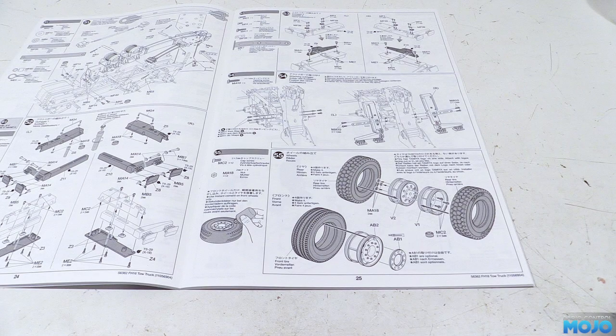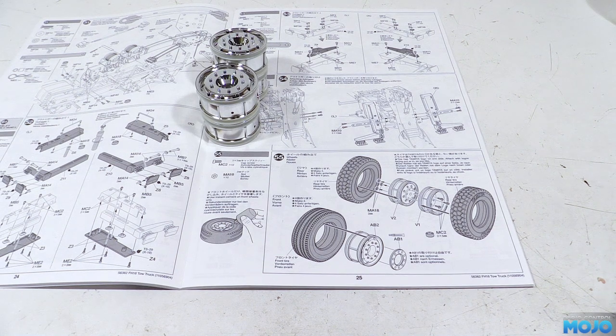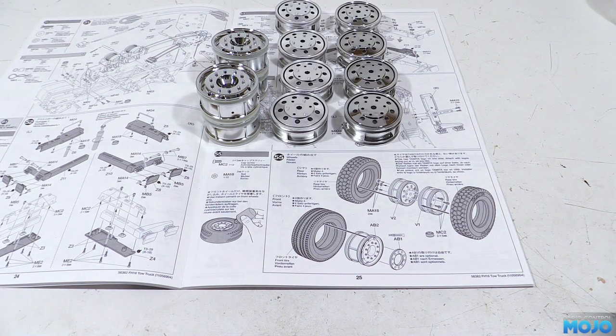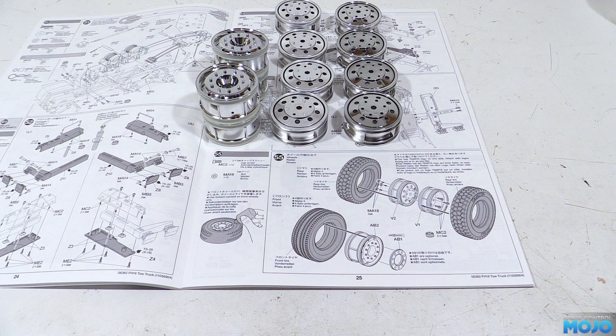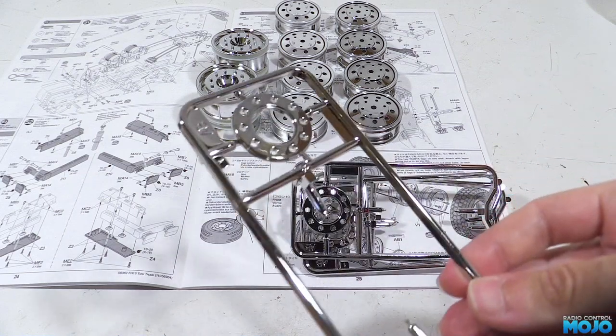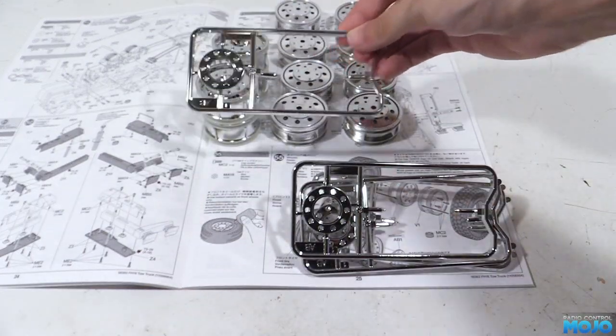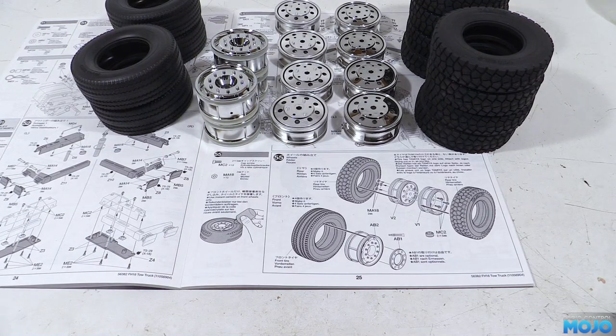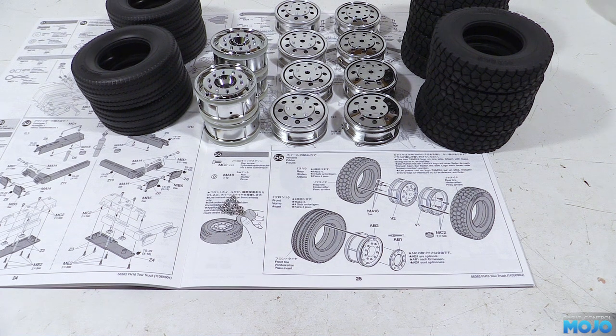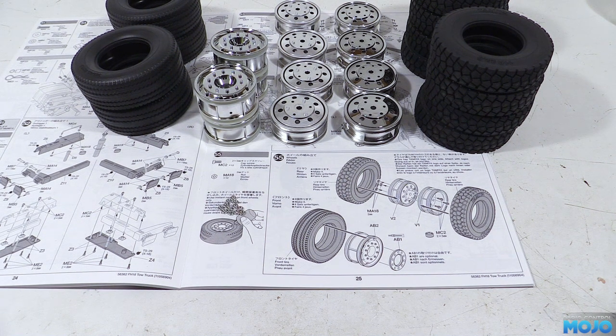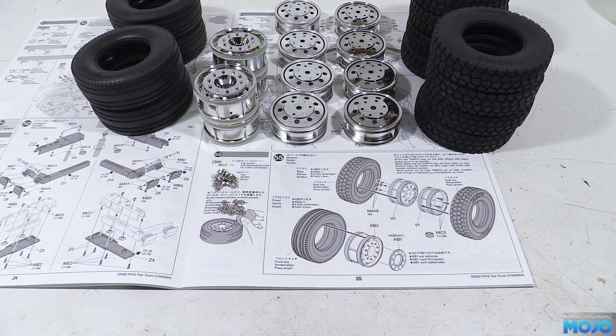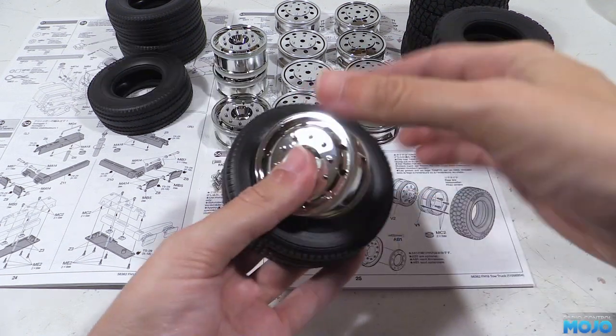Step 55, wheels and tyres. Now we're going to need four AB2s, the front wheels, four V2s, the inner rear wheels, and four V1s, the outers. There's also the AB1s that stick to the front wheels, but we're going to skip them for now and work out what to do with them a little bit later. For tyres we have four wide fronts and eight narrow rears. Then we have the screws where we need 12 M2x5 cap heads and 12 M2 plain nuts.